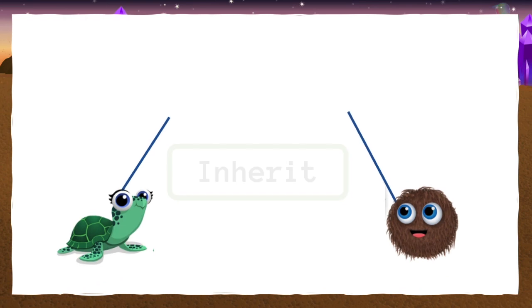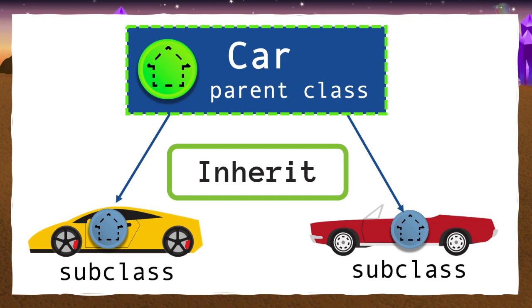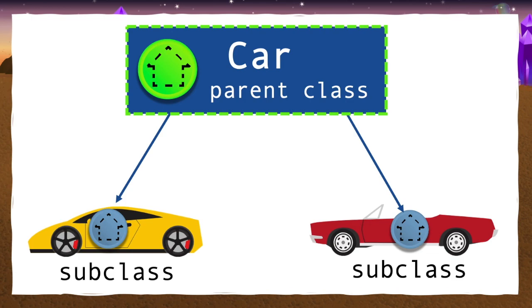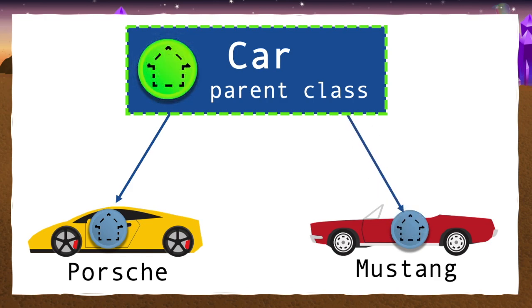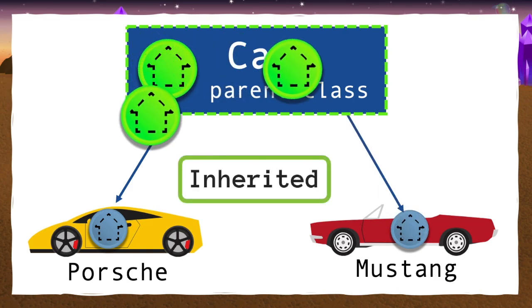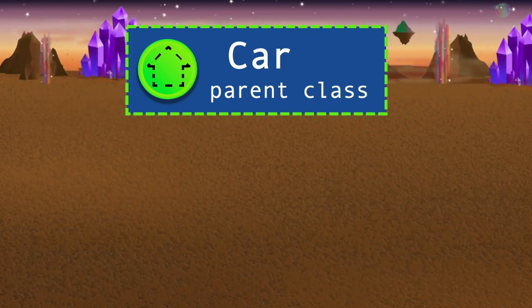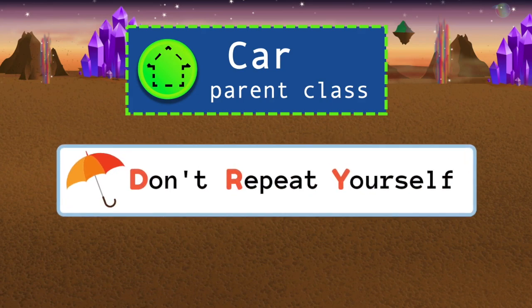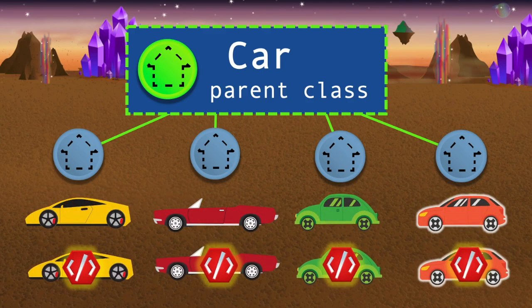You know how creatures inherit certain characteristics from their parents? Subclasses inherit all the same properties and functions from the parent class, too. This means that if a car class blueprint has instructions for four wheels, the blueprint used to create a Porsche will also have four wheels — same with the Mustang blueprint. All of this information gets passed along, or inherited, without you needing to repeat any code that's already in the car blueprint. This helps keep your code DRY, which is especially helpful when you have lots of subclasses and you want to create multiple objects from each one.